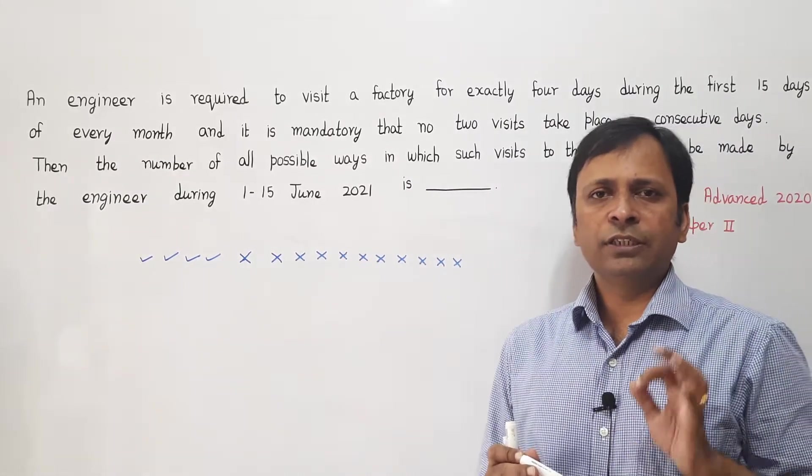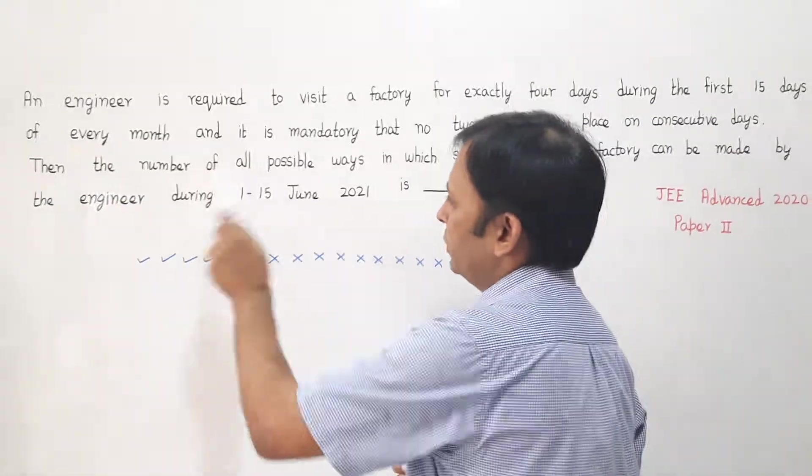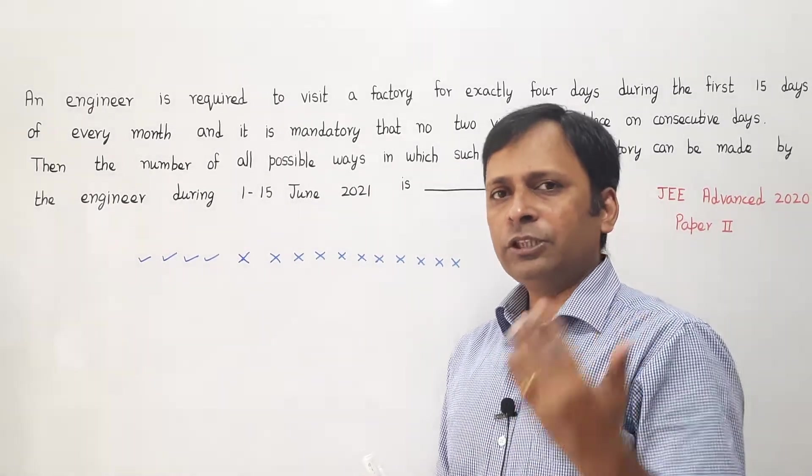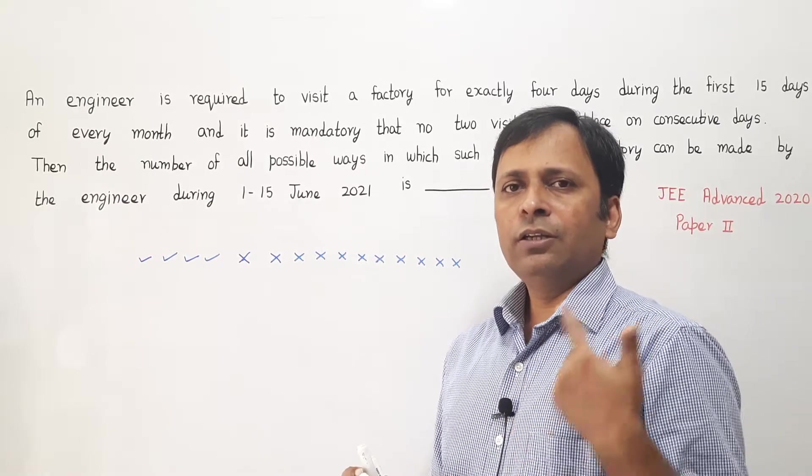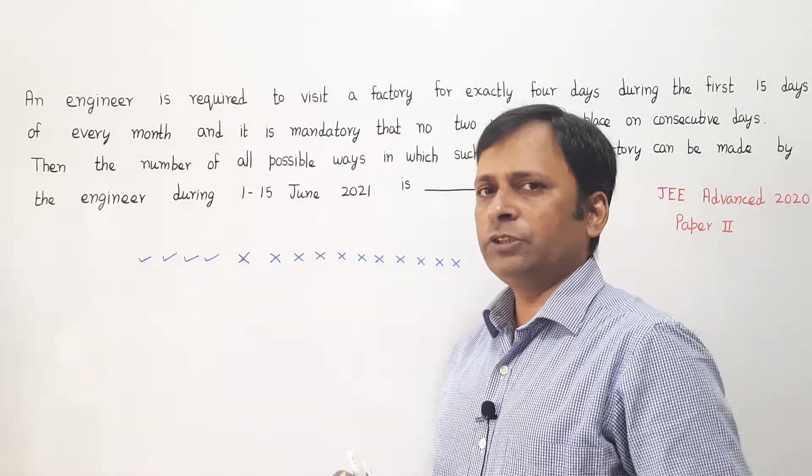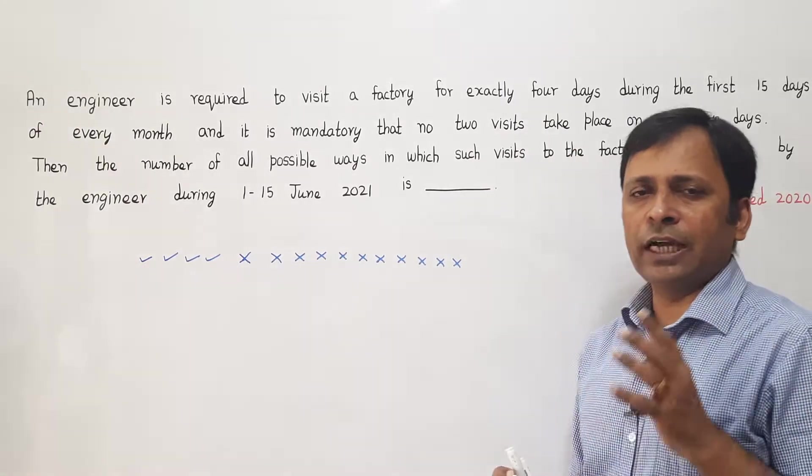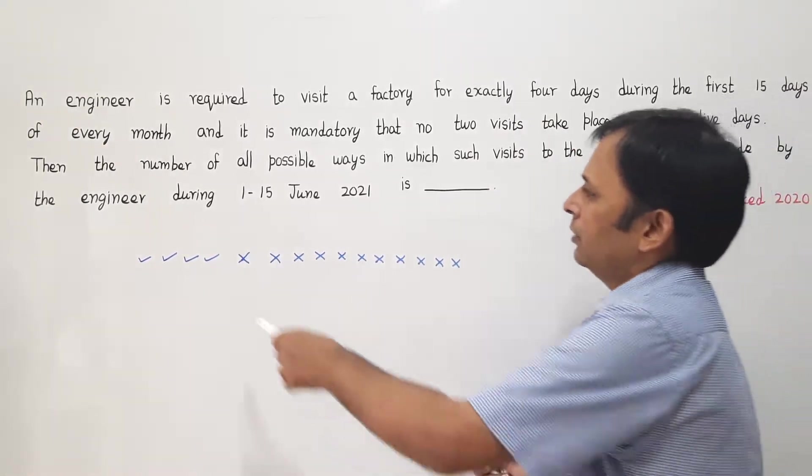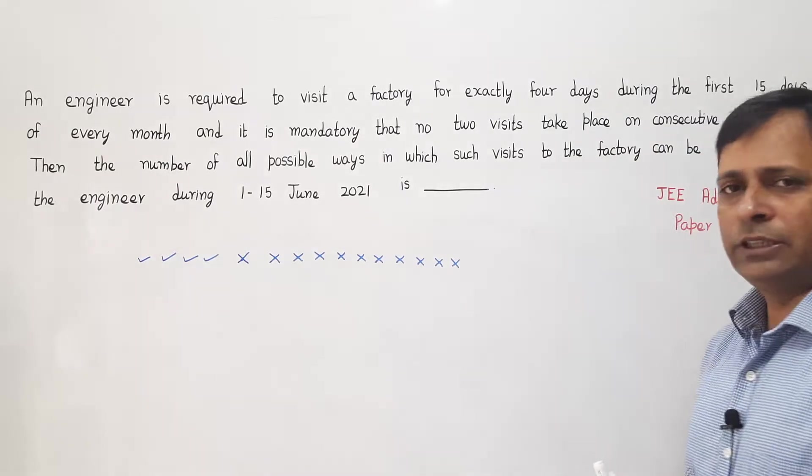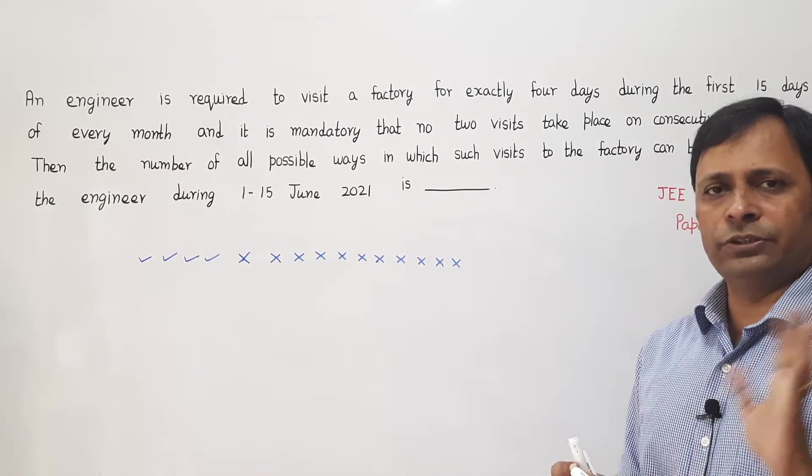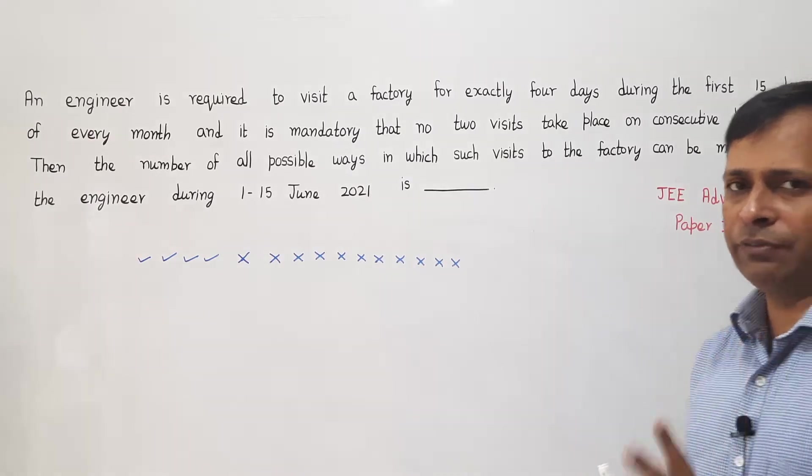Effectively the question is: how many ways can I arrange these ticks and crosses such that no 2 ticks are consecutive? Because if any 2 ticks are consecutive, the engineer is not allowed as per the question. So I need to ensure the arrangement of these ticks and crosses is such that no 2 ticks are consecutive.